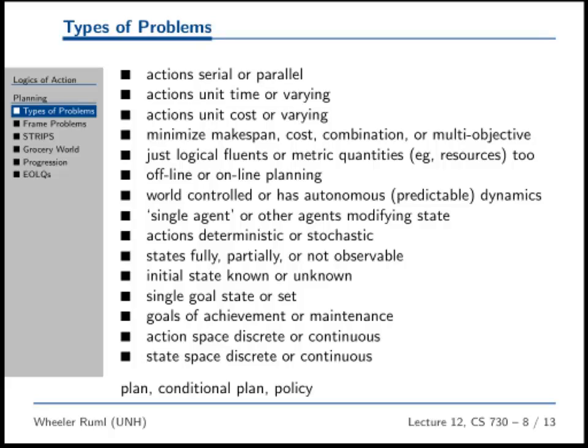The search space when you're searching for makespan is killer. If I have a partial plan and I'm considering more actions to add, unless you happen to add an action after the last action, if the action is anywhere else it doesn't affect the makespan at all. So all these plans look the same as far as cost goes, because the different actions don't affect the makespan. So it's very challenging to make a plan for makespan.